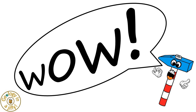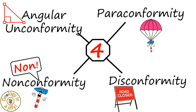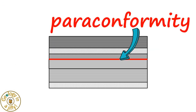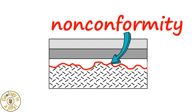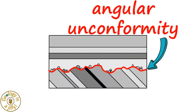Wow! But what is the main type of unconformity present at this location? Of the four types of unconformity, is there a paraconformity? Or a disconformity? Or a nonconformity? Or is it an angular unconformity?